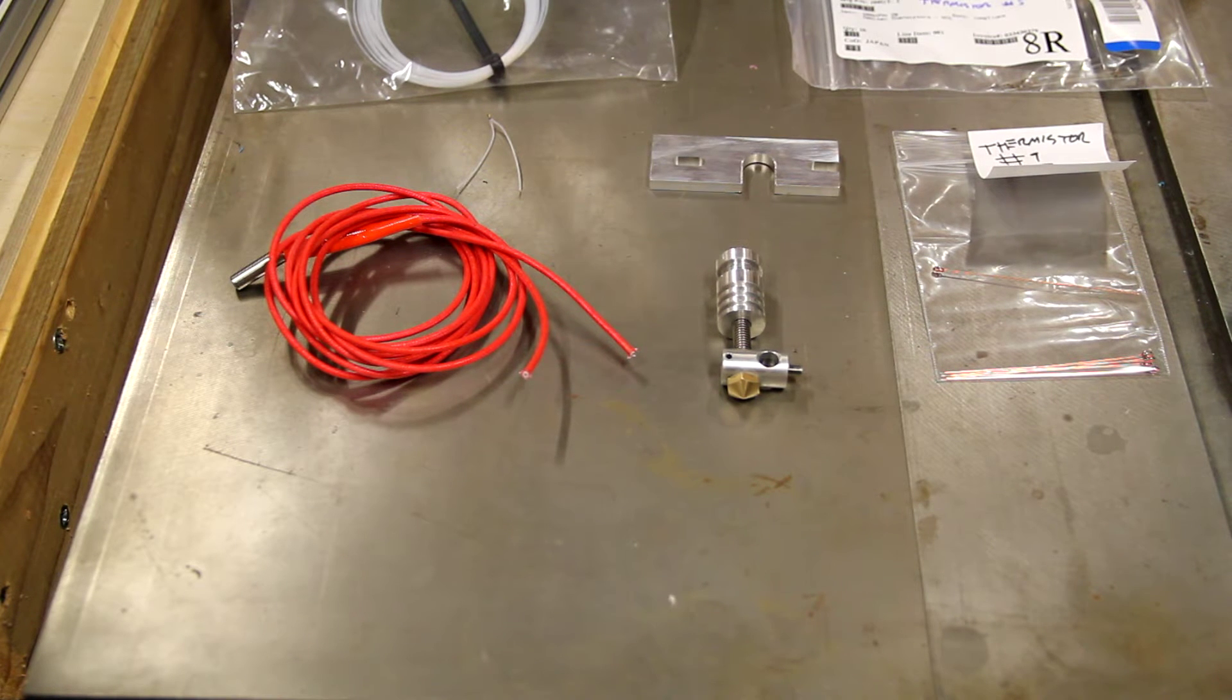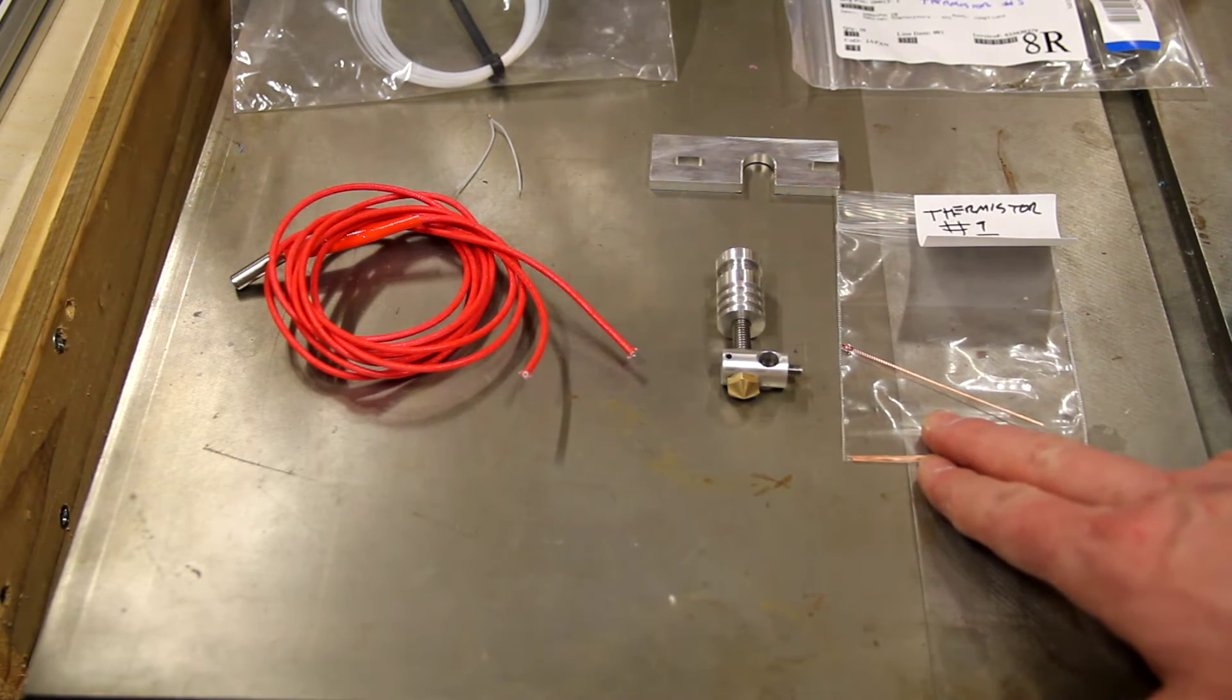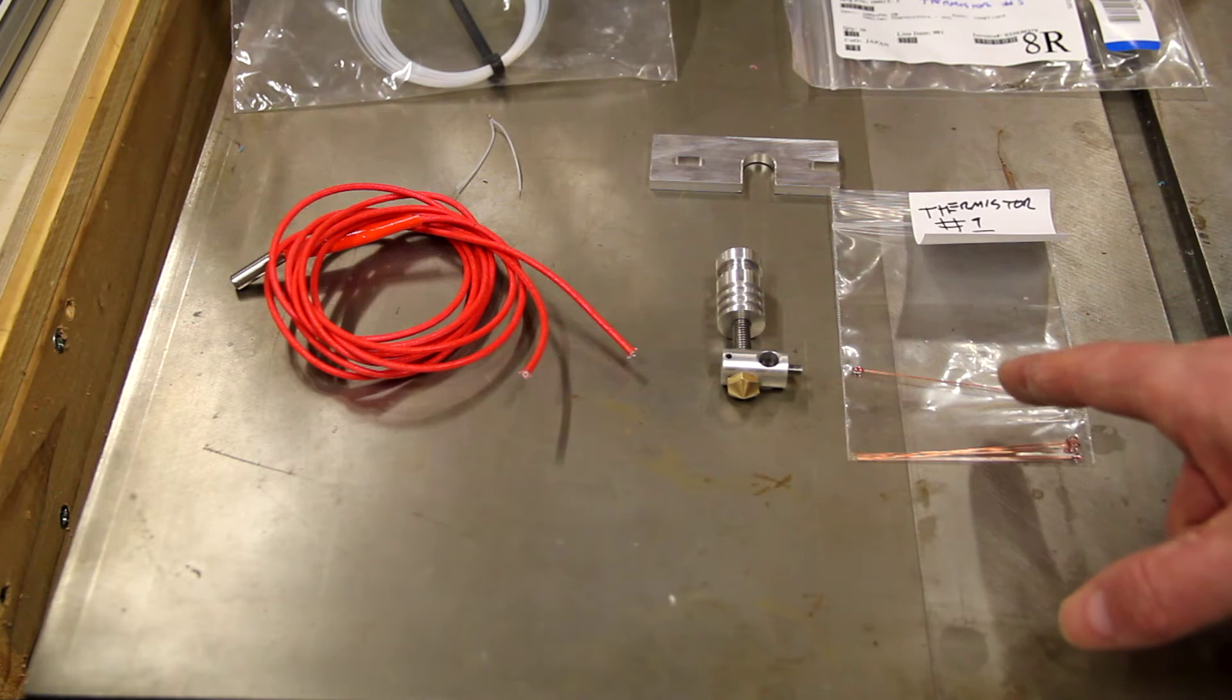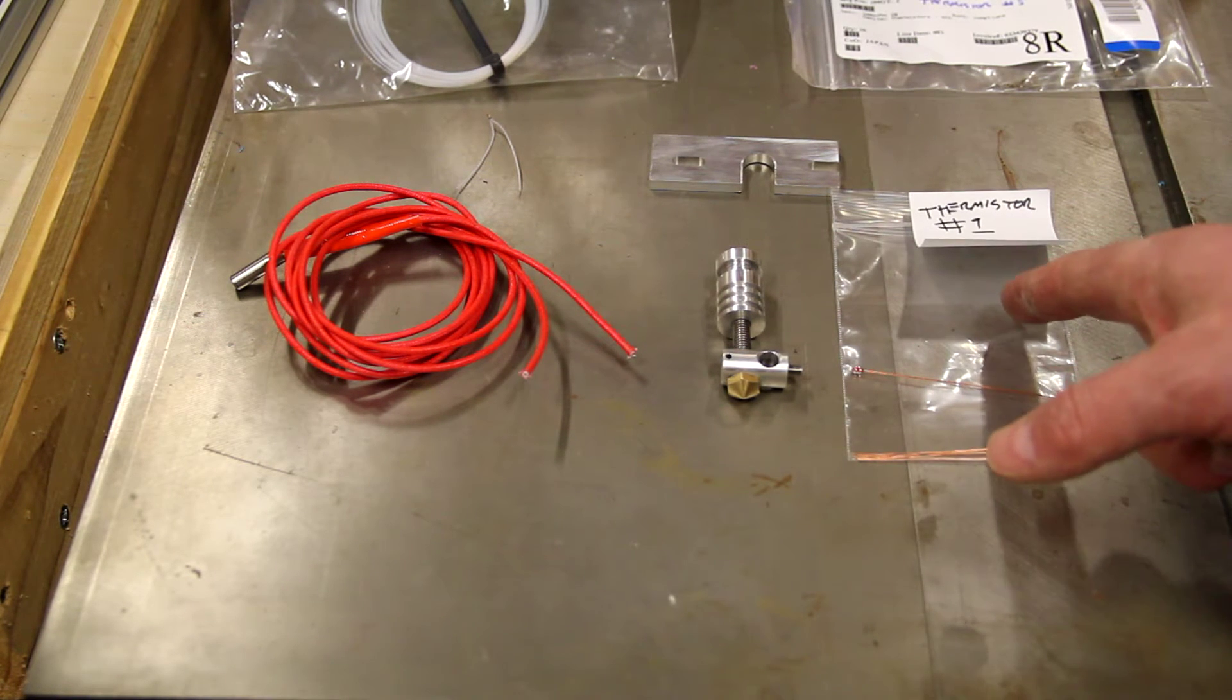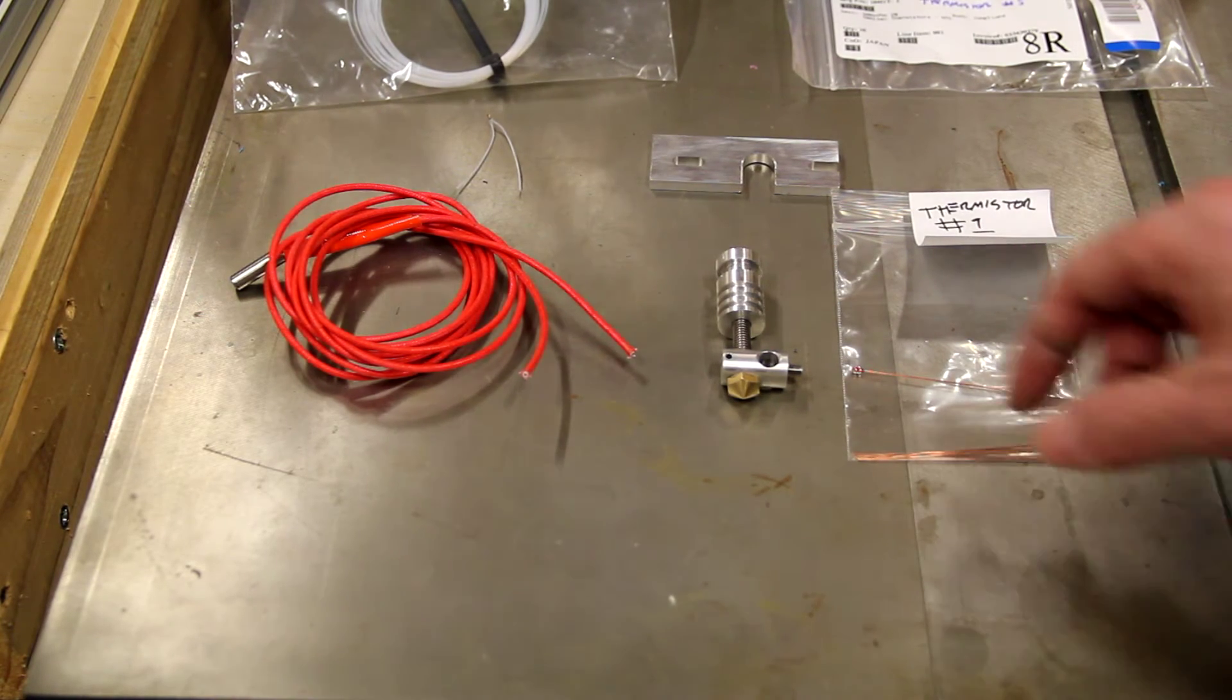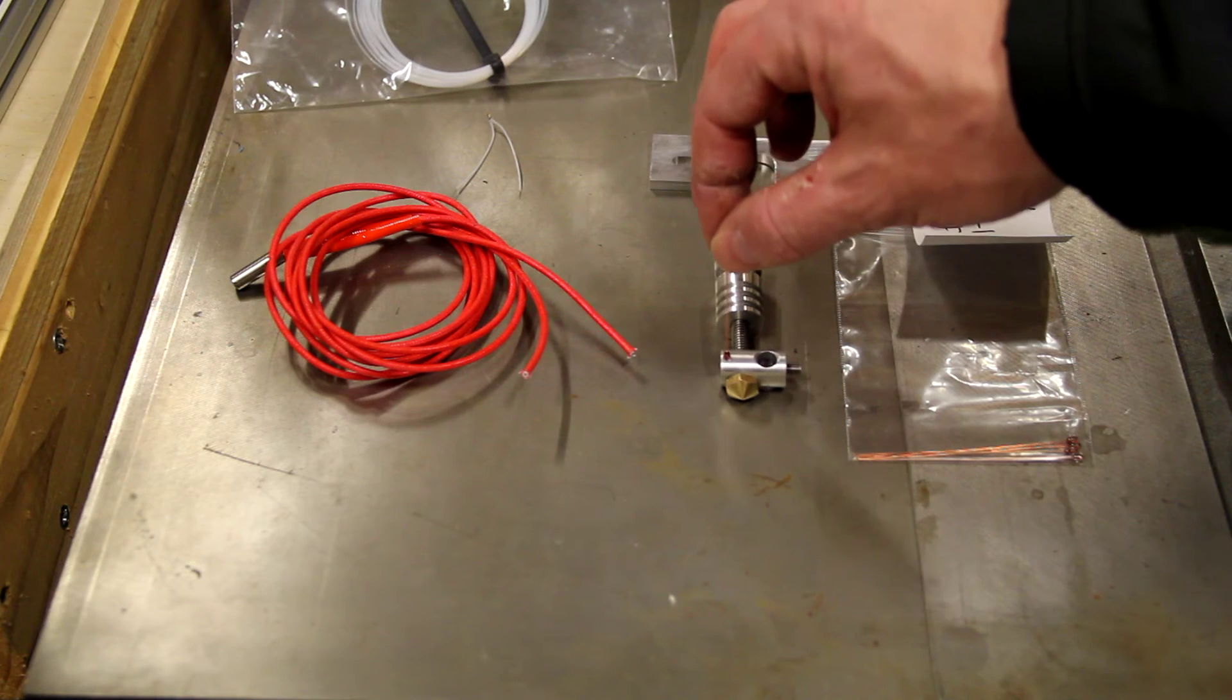The first mistake that I made was I went with what I call thermistor one right here which is the good old standard Epcos 100k that just about everybody has or has used. I have one of these on my j-head and there's another one on my heated bed. I've just labeled this thermistor one because it is thermistor number one in the standard Marlin thermistor tables. This is what I got first and what I did find out was that it just won't fit in the hole for the thermistor in the Alu hotend version four.